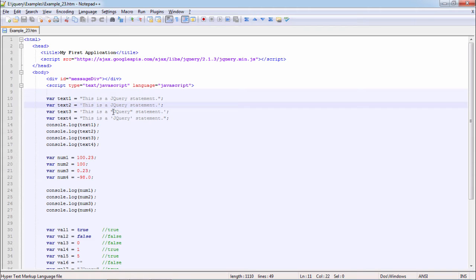Text2 is enclosed by single quotes. In text3 we have used double quotes within single quotes, so that we can have double quotes in our string. Text4 explains use of single quote in the string. This will print all these strings as we will see in our output.